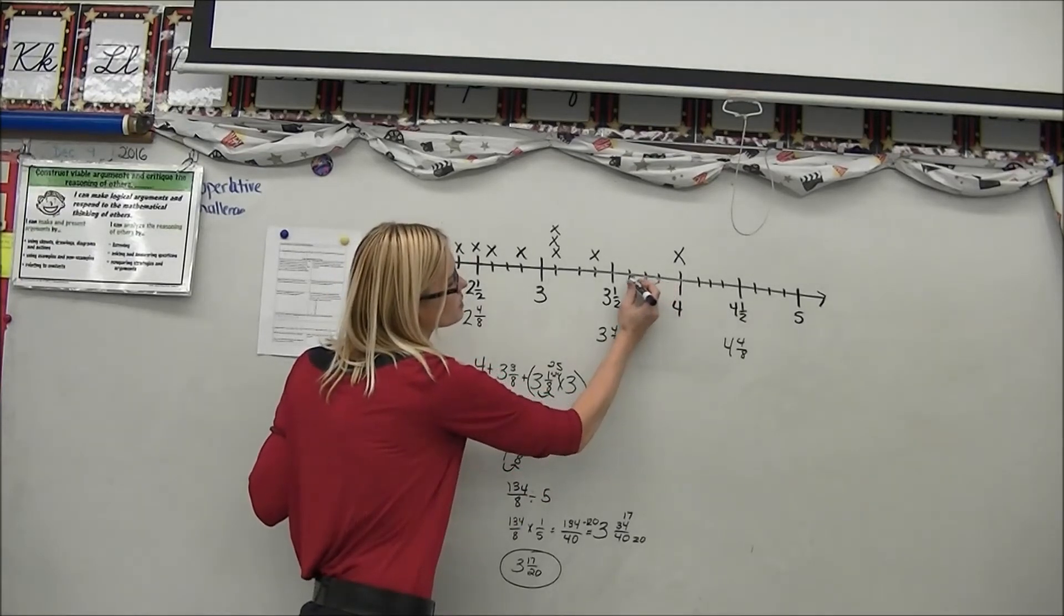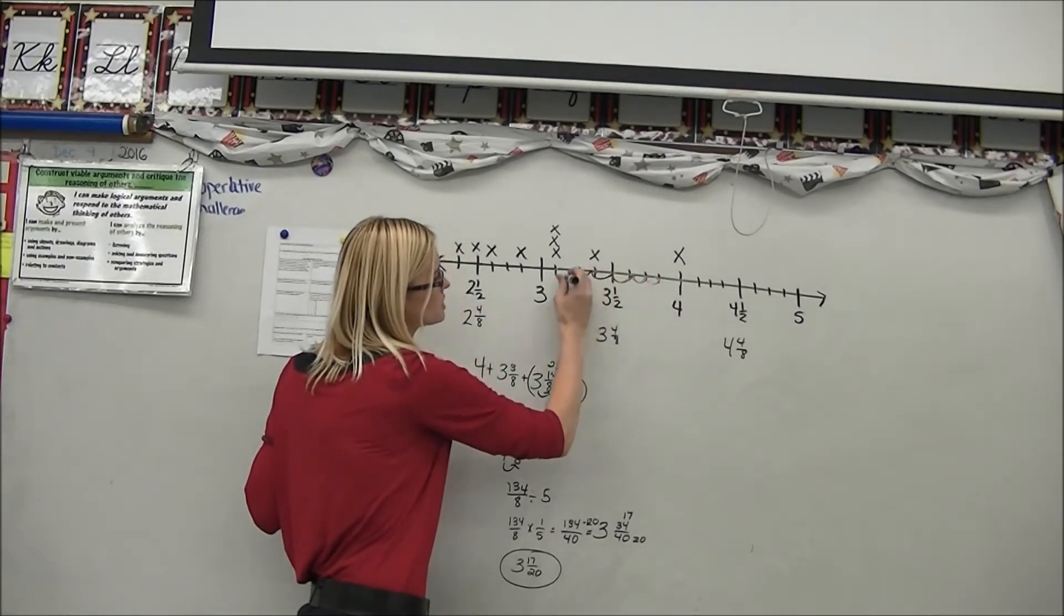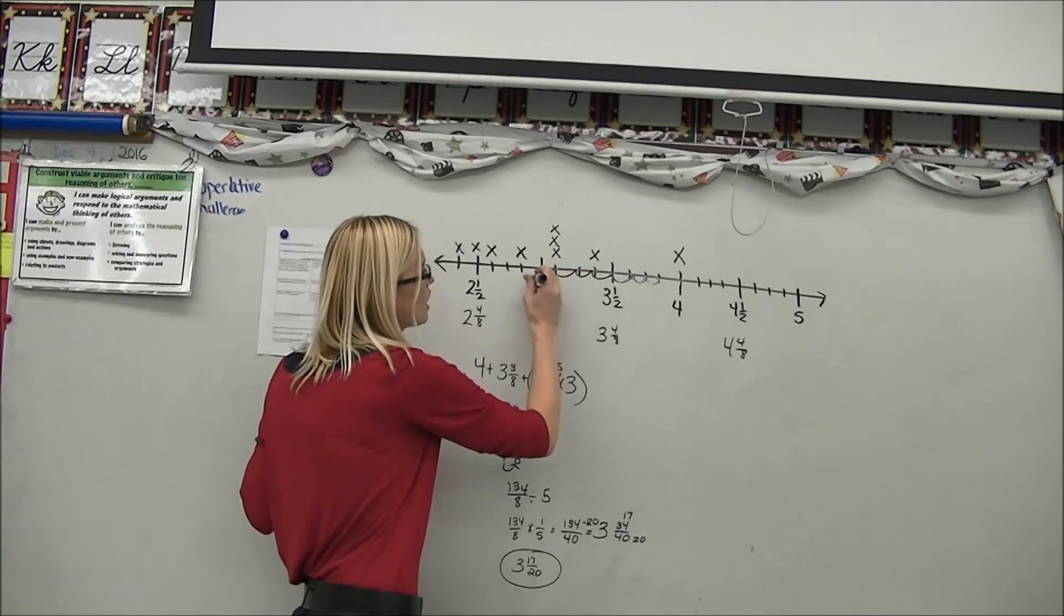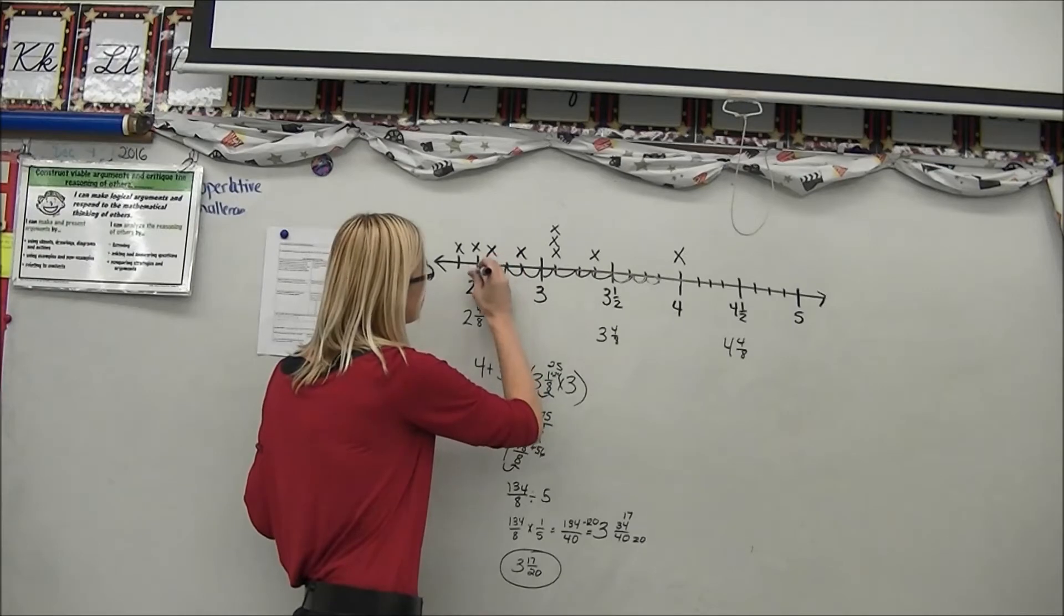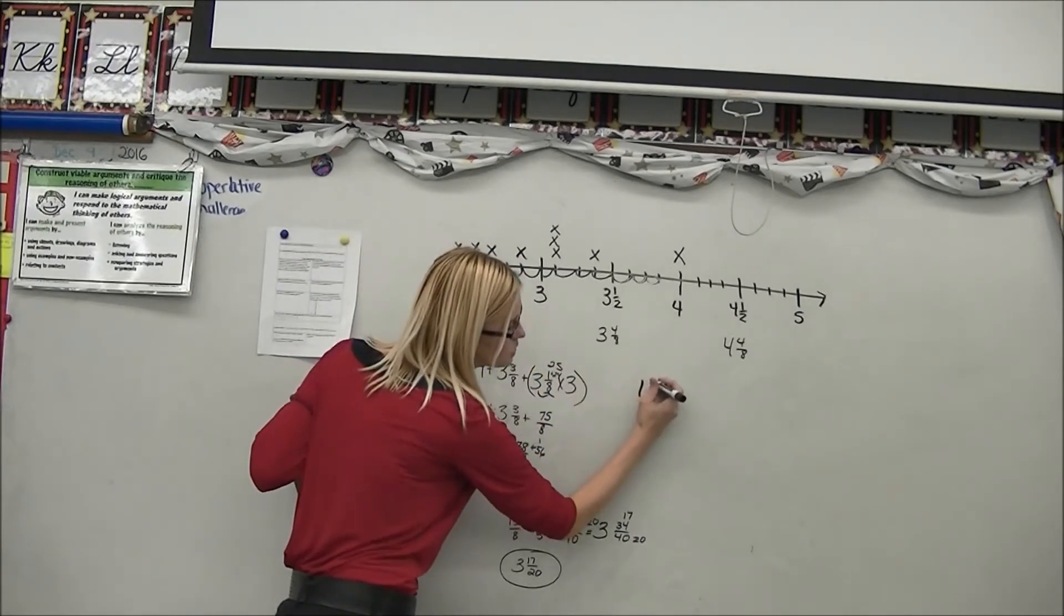1 eighth, 2 eighths, 3 eighths, 4 eighths, 5 eighths, 6 eighths, 7 eighths, 8 eighths, 8 eighths, 1 and 1 eighth, 1 and 2 eighths, 1 and 3 eighths, 1 and 4 eighths, 1 and 5 eighths. So that should be my difference.